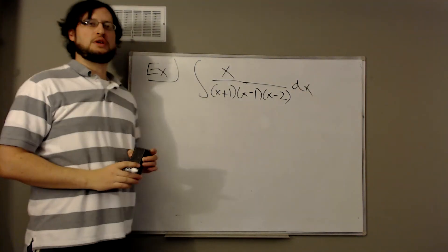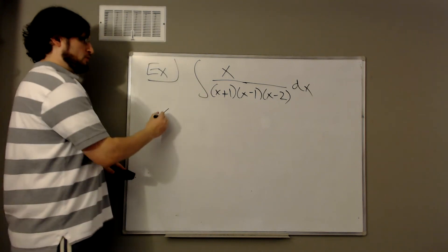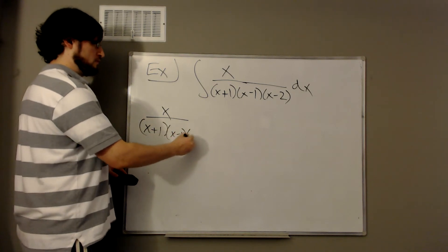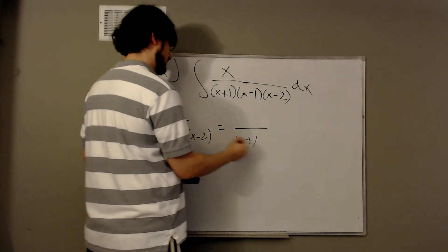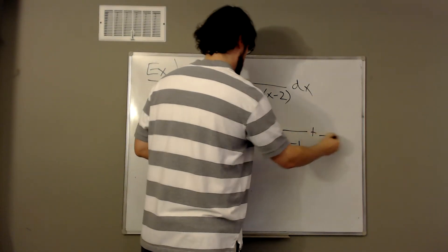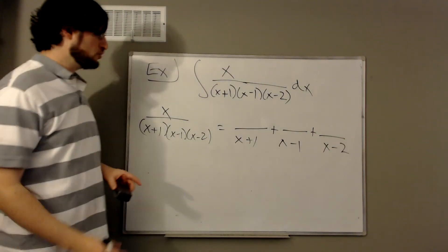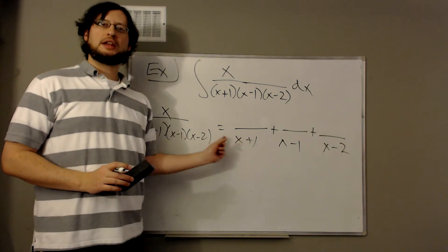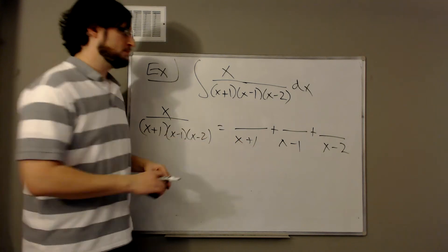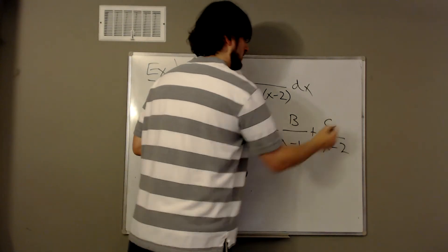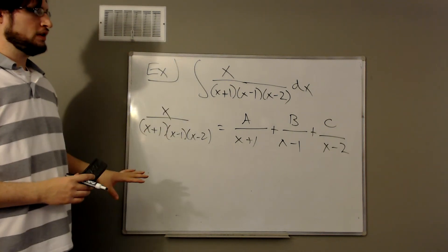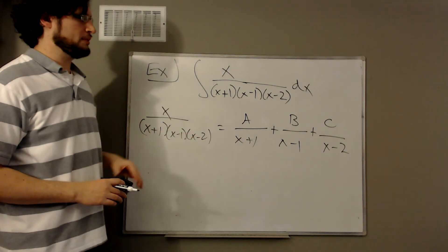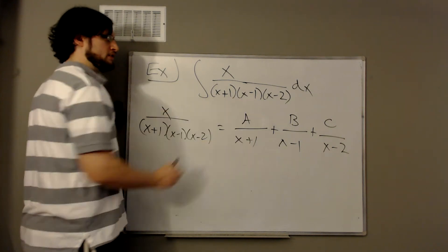Let's look at one that's a bit more complicated. We want to find the antiderivative of x over x minus 1 times x minus 2 times x plus 1 — still polynomial over polynomial. We're going to break this up into three pieces, one for each linear factor. As it turns out, if the denominator factor is linear, the numerator just has to be a constant.